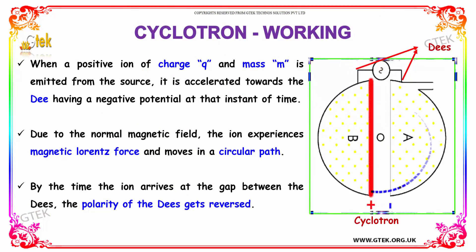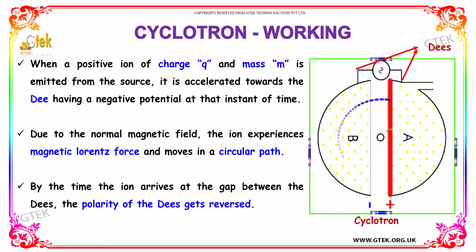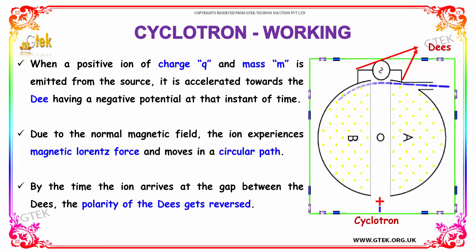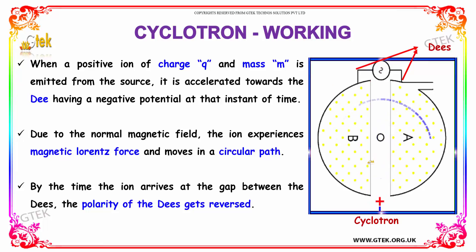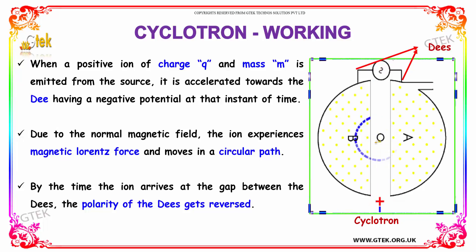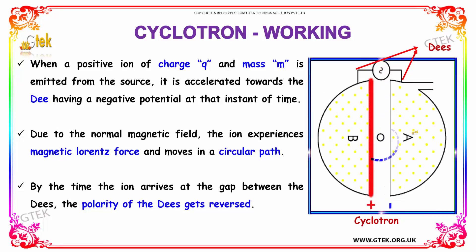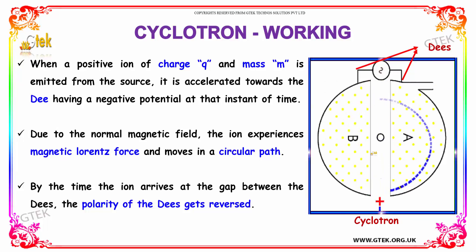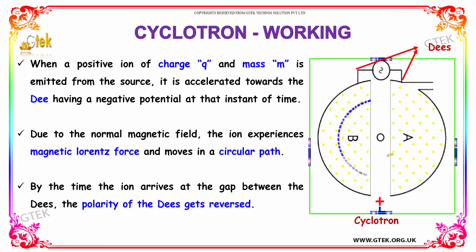When a positive ion of charge Q and mass M is emitted from the source, it is accelerated towards the D having a negative potential at that instant. Due to the normal magnetic field, the ion experiences magnetic Lorentz force and moves in a circular path. By the time the ion arrives at the gap between the D's, the polarity of the D's gets reversed — positive becomes negative, negative becomes positive — and the polarities of the D's keep reversing.